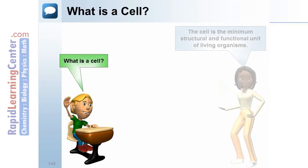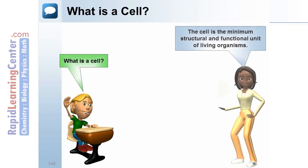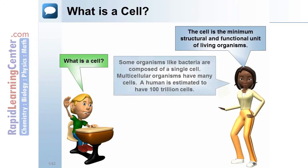What is a cell? The cell is the minimum structural and functional unit of living organisms. Some organisms, like bacteria, are composed of a single cell. Multicellular organisms have many cells. A human is estimated to have a hundred trillion cells.